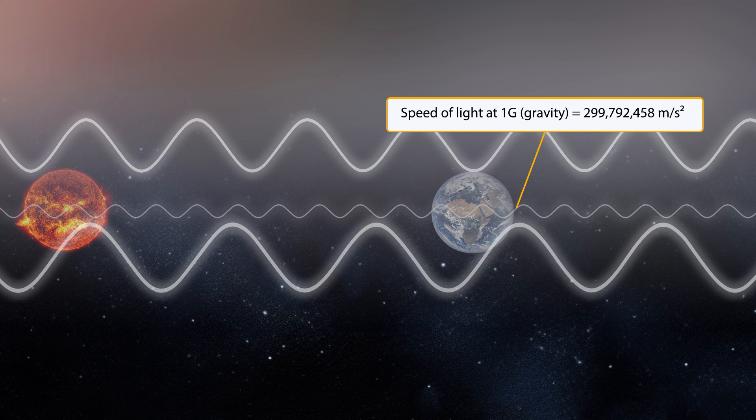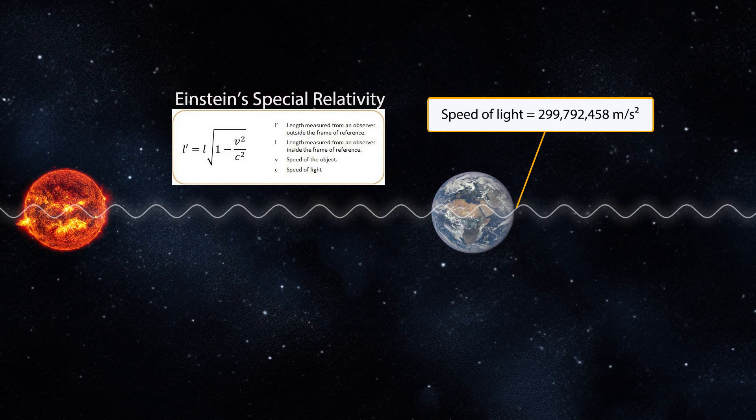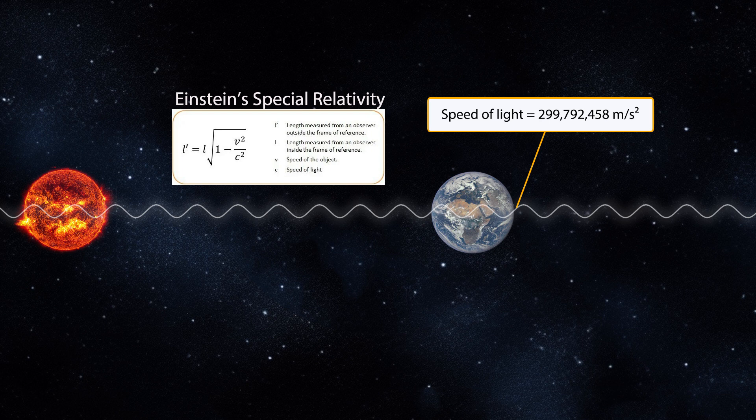The Michelson-Morley experiment in 1887 attempted to show that light travels slower or faster in space depending on the direction of light relative to the direction of travel. The experiment showed no change, and Einstein later proved that the speed of light is constant in a vacuum in every direction, no matter the speed or direction of the source.